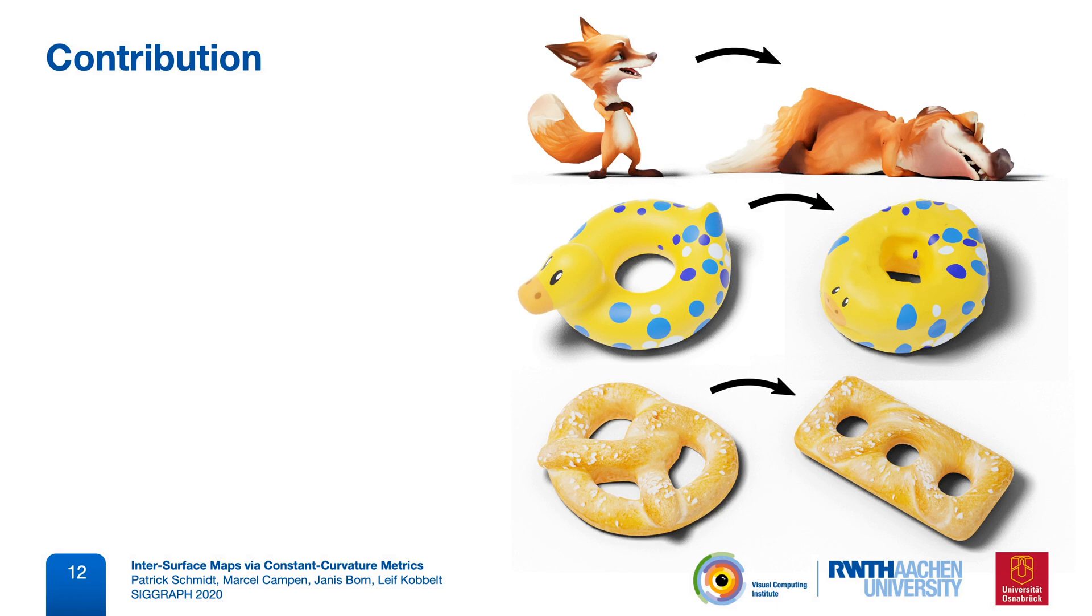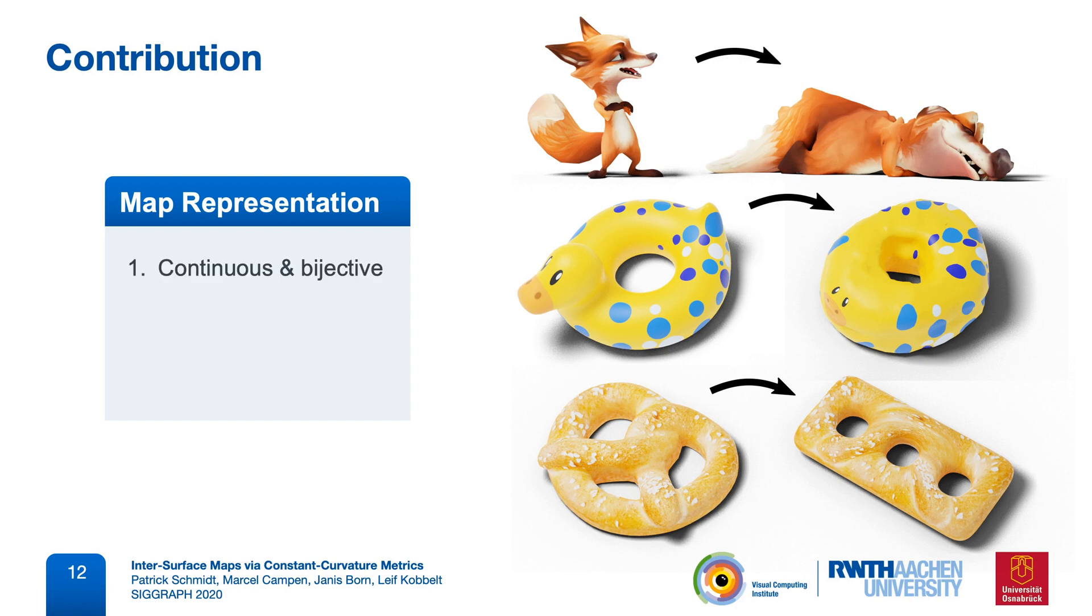In this paper we present a new map representation for discrete surface homeomorphisms. So our maps are guaranteed to be continuous and bijective, they are defined at every surface point in a continuous sense, not just at the vertices, they can be optimized for low distortion using continuous global optimization, and our representation supports general topology, meaning that it works for closed surfaces of any genus.